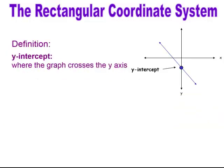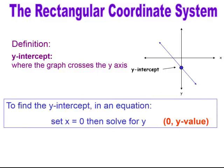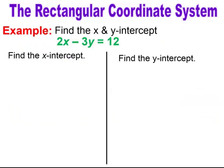The Y-intercept is where the graph crosses the Y-axis. If it's on the Y-axis, every value of X on the Y-axis is equal to 0. So when you're trying to find the Y-intercept in an equation, you set X equal to 0 and solve for Y. The ordered pair would have 0 in the X-spot and a Y-value that you've found.